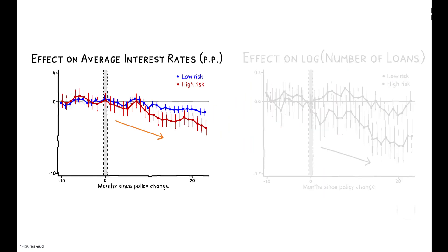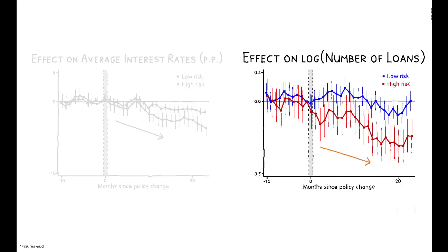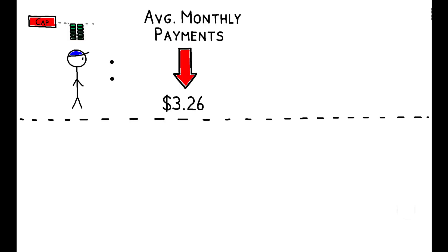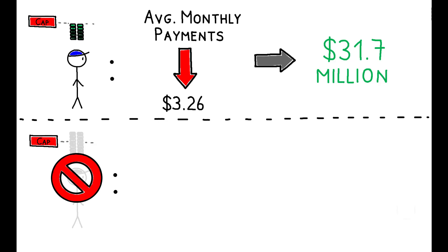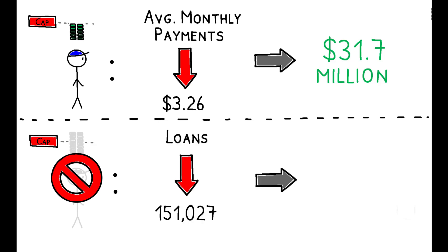While interest rate caps make credit more affordable for those who are able to get a loan, they also cut riskier borrowers out of the market entirely. Overall, average monthly payments decreased by $3.26 as a result of the stronger interest rate regulations, amounting to aggregate savings for borrowers of over $31 million in present value per year. On the other hand, over 150,000 fewer loans were made as a result of the reforms, totaling over $360 million in lost credit.